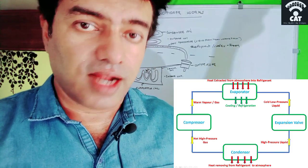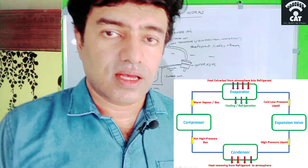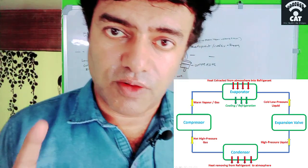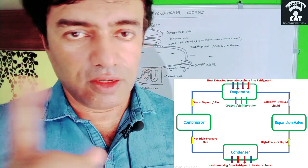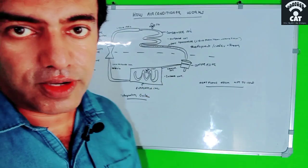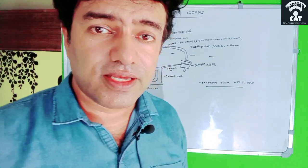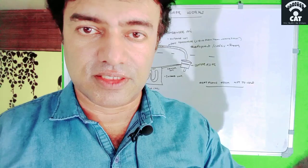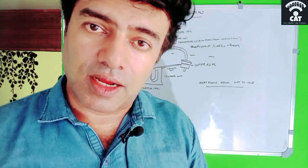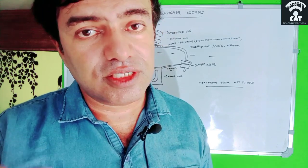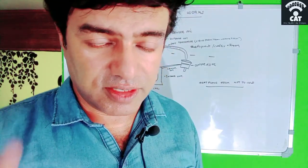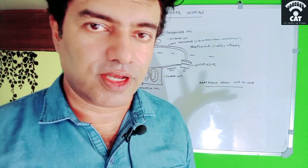Compressor and condenser are in the outdoor unit. Then comes the expansion valve — that is the first E — and the evaporator coil — that is the second E. These two E's are in the indoor unit, which is the split AC unit inside our room. These four components are connected with tubes, and the refrigerant R22 or Freon passes through all of them.